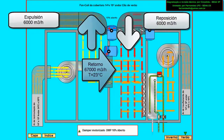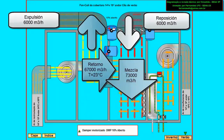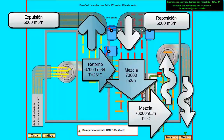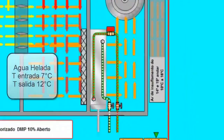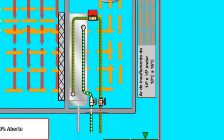4. Supply air mixture, with a value of 73,000 cubic meters per hour of air. The temperature value of this mixture must be close to 24 degrees Celsius. 5. The supply air mixture, after the exchanger, comes out with a temperature of 12 degrees Celsius. 6. The chilled water enters the exchanger with a temperature of 7 degrees Celsius and leaves the exchanger with a temperature of 12 degrees Celsius.